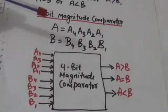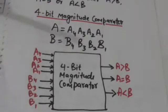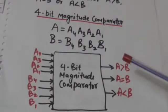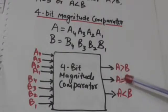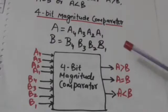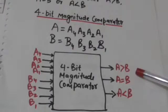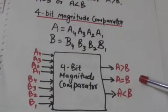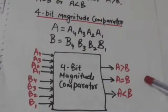A 4-bit magnitude comparator will have eight input variables and three output variables — one for each bit of the numbers to be compared. The three outputs are labeled: A greater than B, A equals B, and A less than B. The value of A greater than B equals 1 when A is greater than B, A equals B is 1 when A equals B, and A less than B equals 1 when A is less than B.